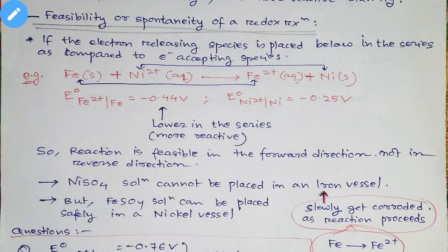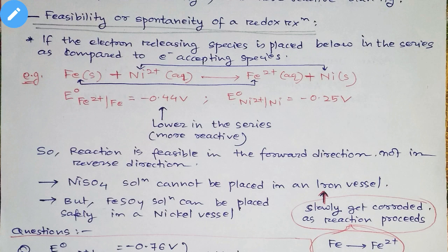Iron is placed lower in this series than nickel — you can go and check the series. That means iron is more reducing in nature; it is more reactive in nature. Since iron is more reactive, iron will change to iron two-positive. Now if we want to write half-cell reactions, how can we write the two half-cell reactions?